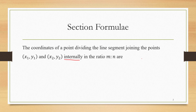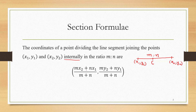What we mean by sectioning is that if we have two points x1,y1 and x2,y2 and we want to divide the line segment joining these two points in some ratio m:n internally, that means we want to find a point C on this line such that C divides the line segment in the ratio m:n. Then the coordinates of C are given by (mx2 + nx1)/(m+n), (my2 + ny1)/(m+n).